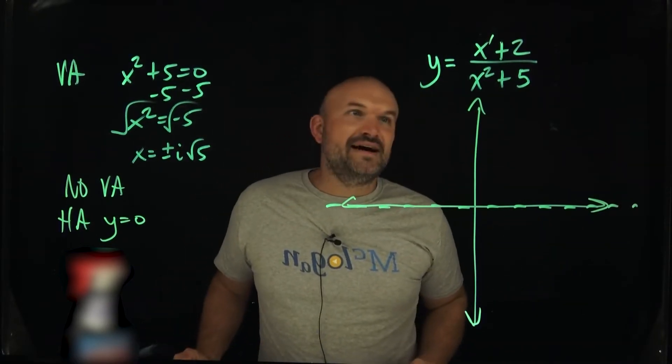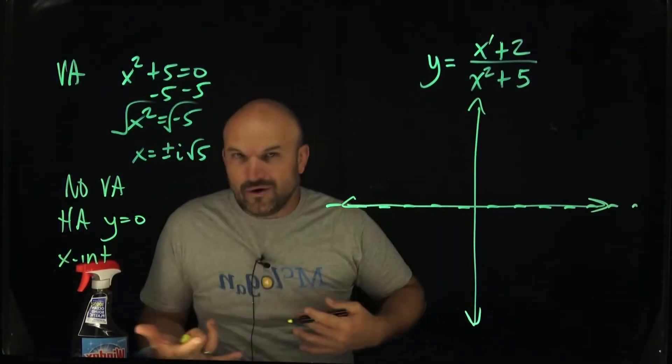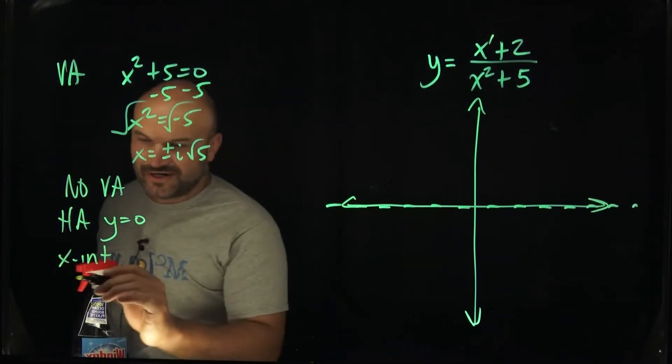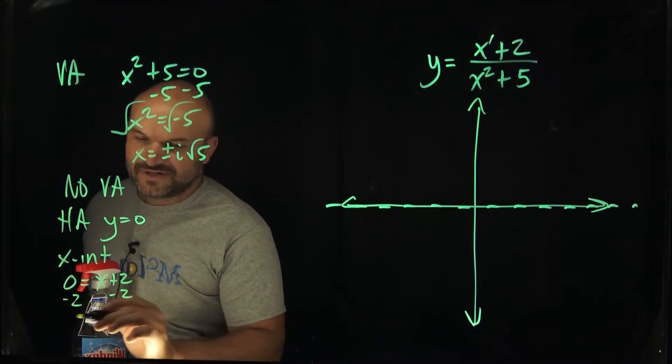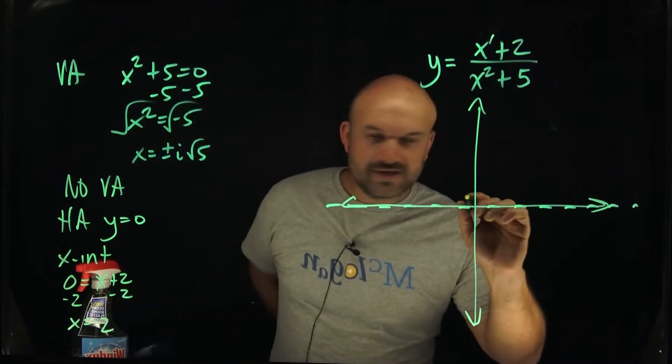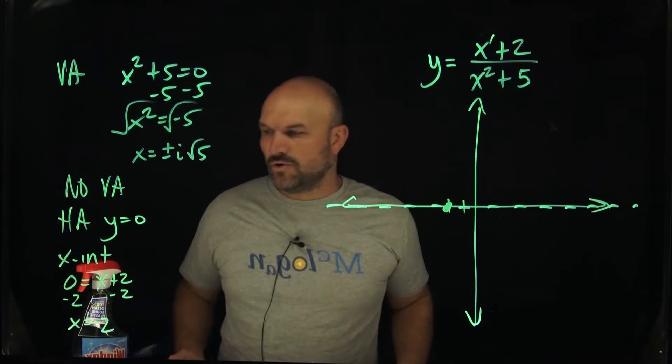The next thing, let's go ahead and find the x and y intercepts. So if I want to find the x intercept, remember that's when y is equal to zero, or if you've already done this a couple times, you already know that you can just set your numerator equal to zero and solve. So x is equal to negative two. So how does this work? How can you have an intercept on a horizontal asymptote? A lot of students will say that can't happen.